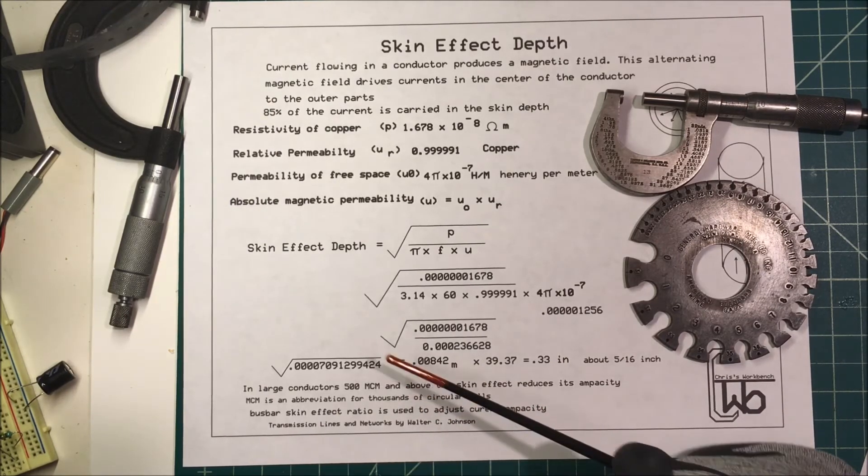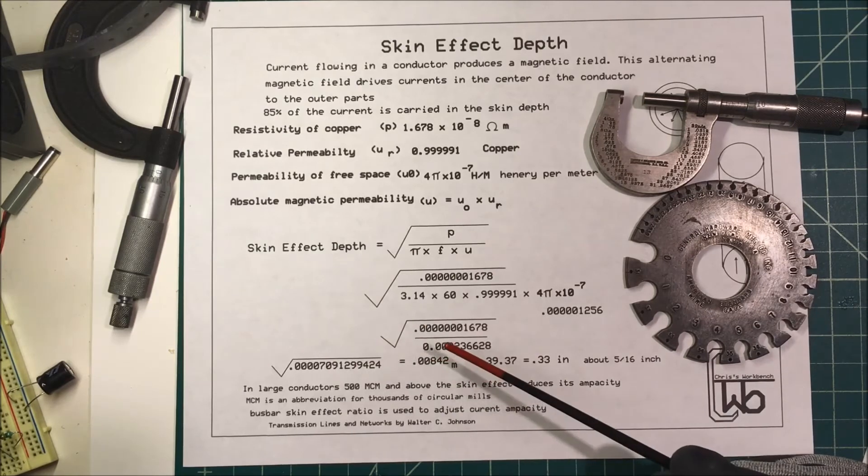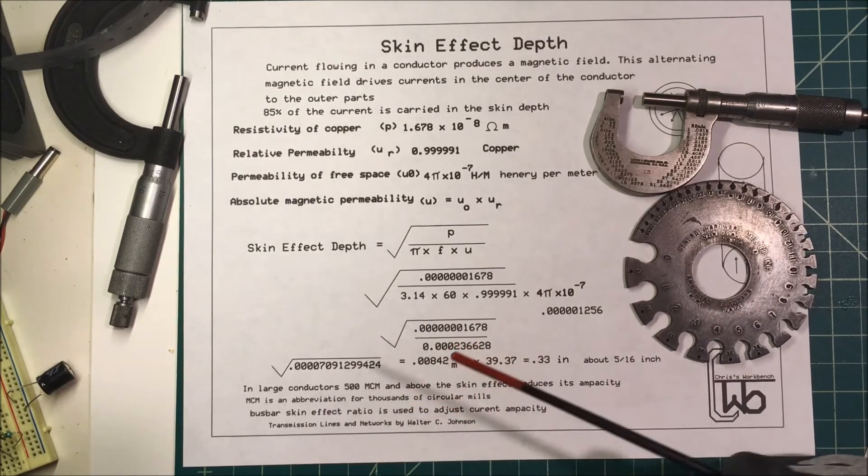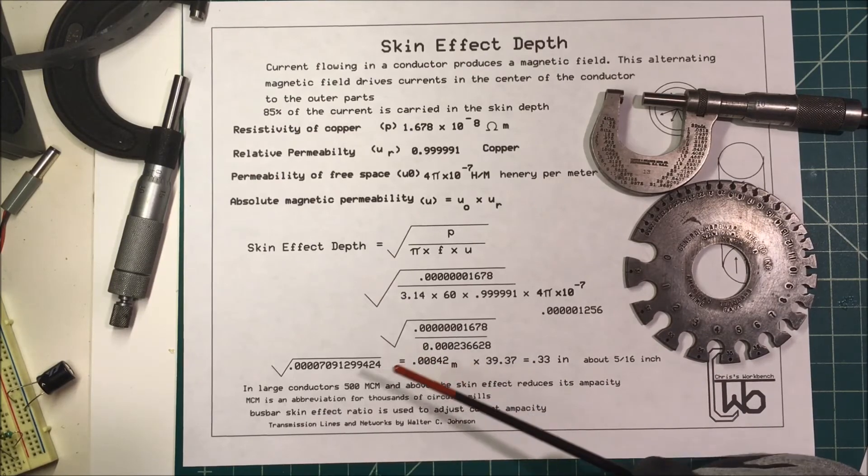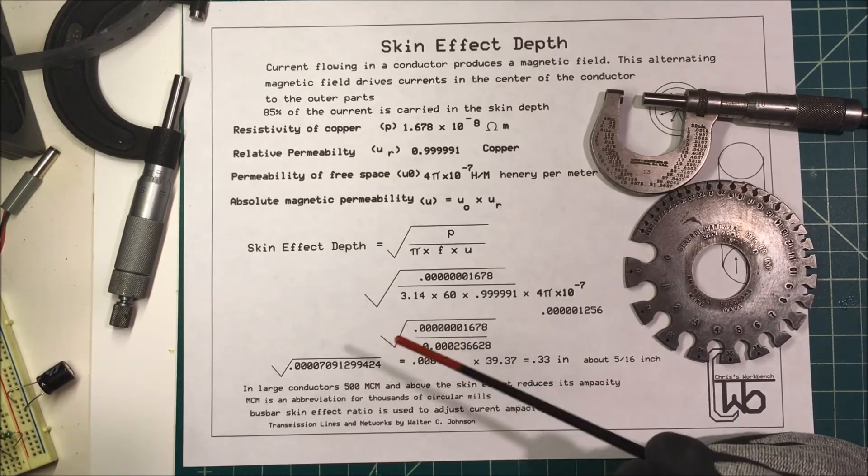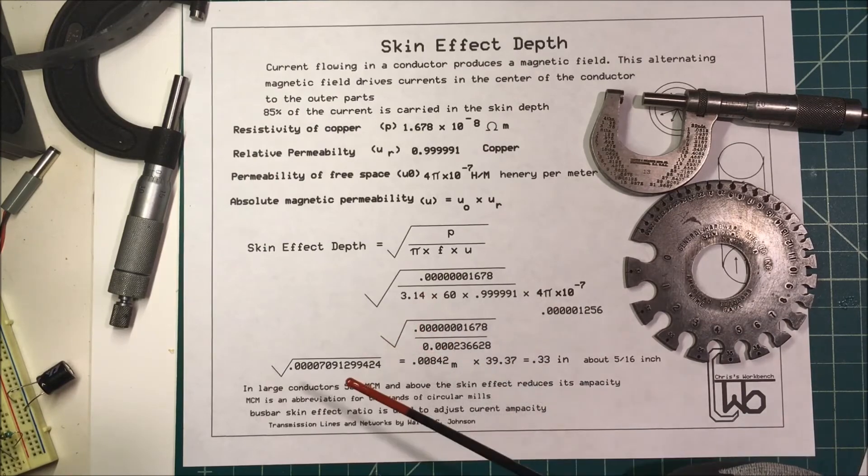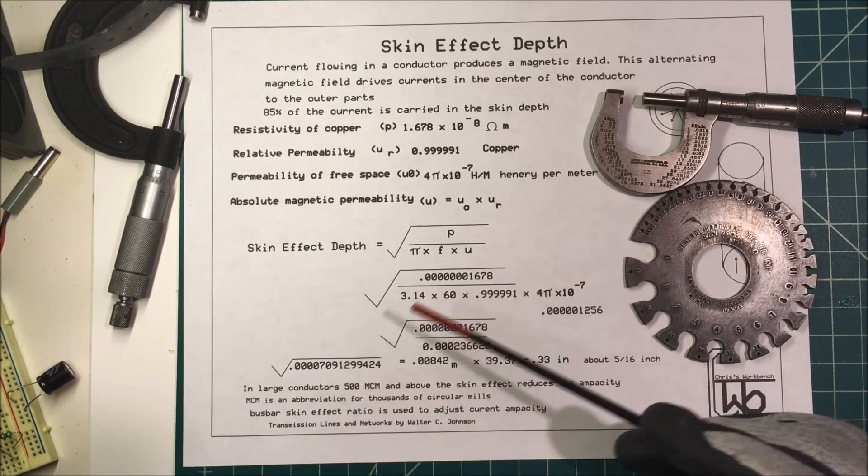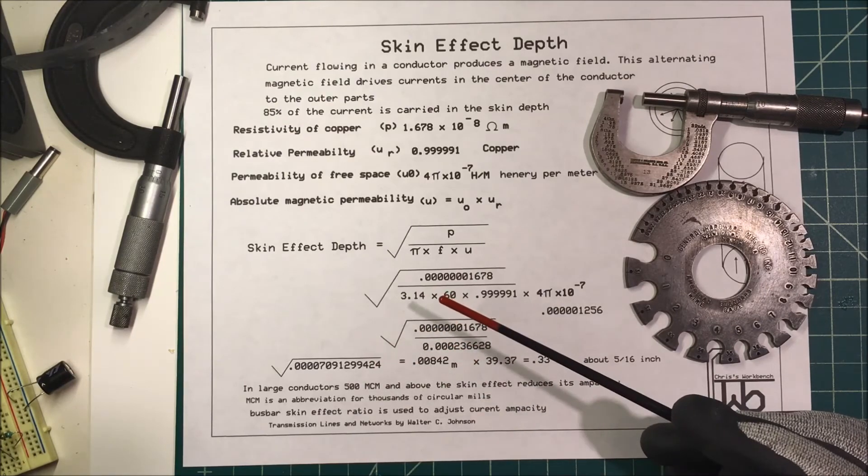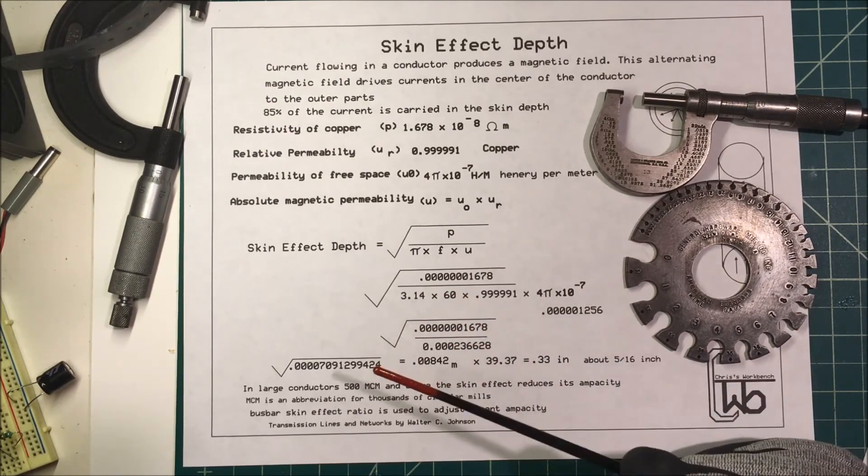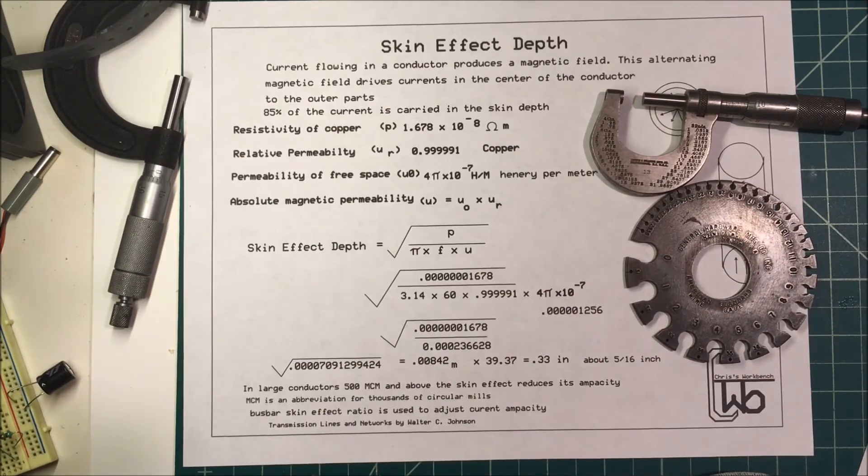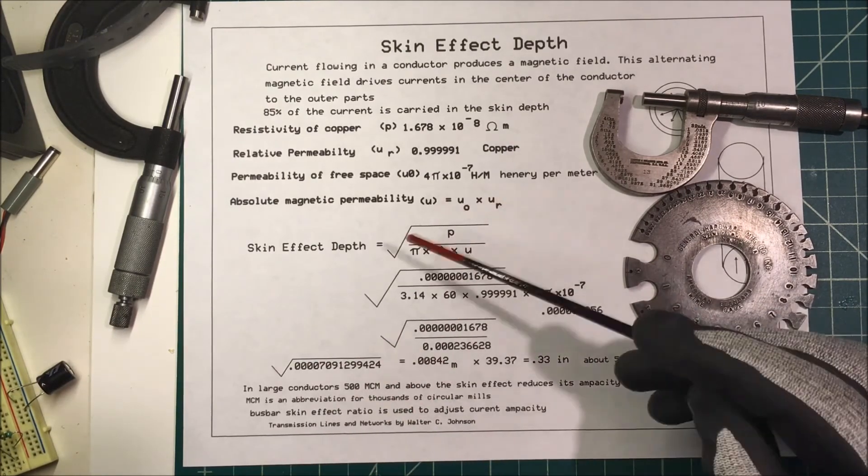There's ways to get around the skin effect by using smaller wires and insulating them and bundling them up. The high power cables will run a steel core in the center with aluminum around the outside. The aluminum carries the bulk of the current and the steel is in the center so they can run long spans of cable in the air.